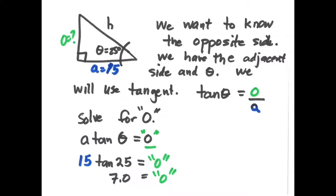In this case, we are not interested in the hypotenuse. We have the adjacent side and we're interested in the opposite side, with angle theta given. We use the tangent function, because tangent equals opposite divided by adjacent. Solving for O: adjacent side times tangent of theta equals the opposite side. Plugging those in — 15 times tangent of 25 degrees — equals the opposite side, which gives us 7.